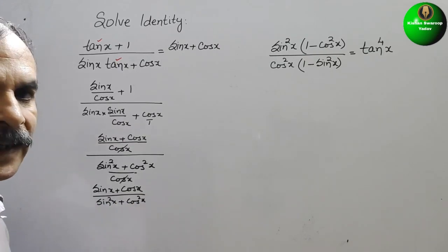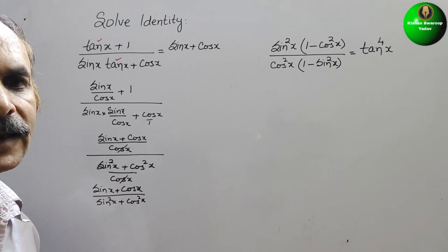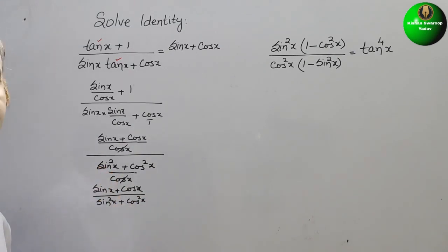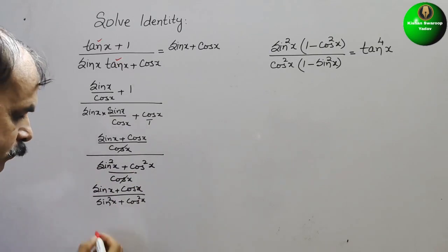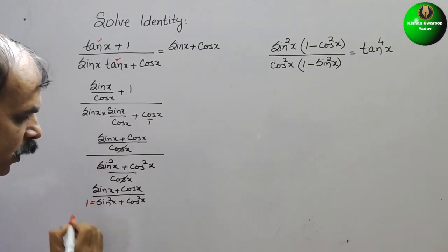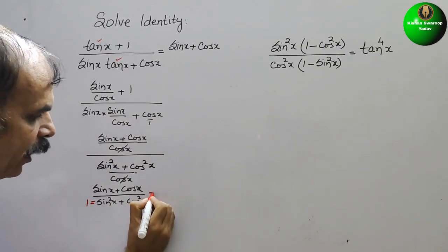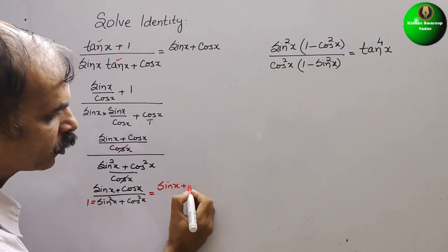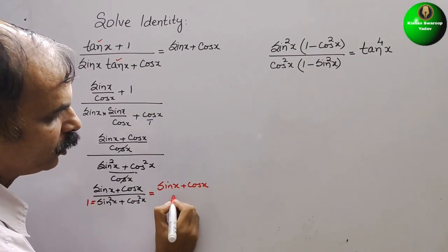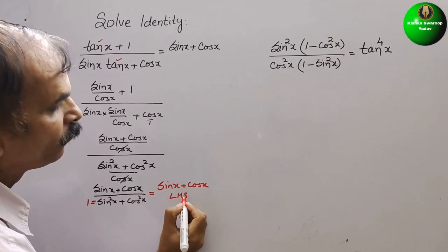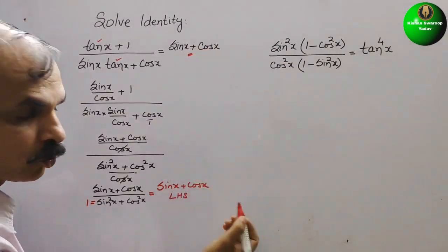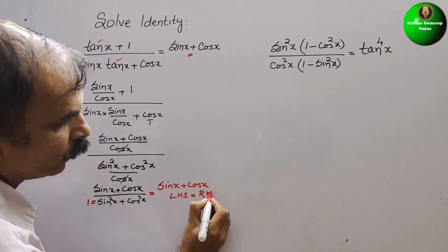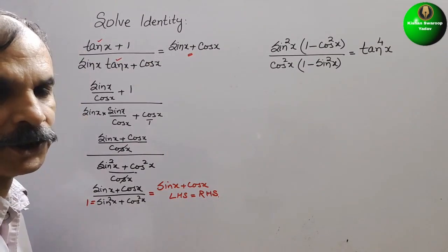So we know that one identity is there: sin square x plus cos square x is equal to 1. So this equals 1, therefore we will get sin x plus cos x. So this is your LHS and RHS is also the same, so LHS is equal to RHS.